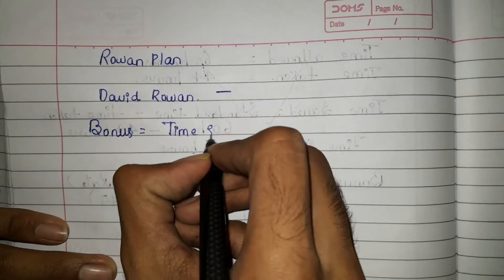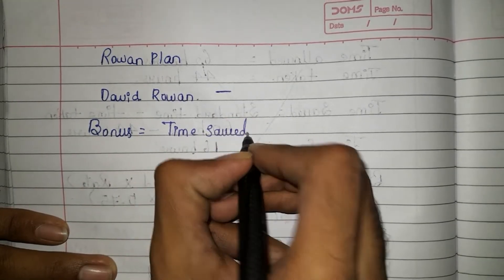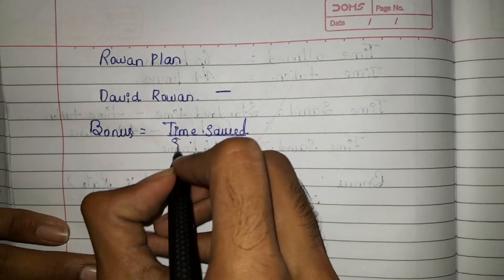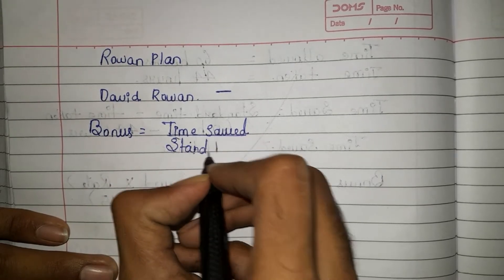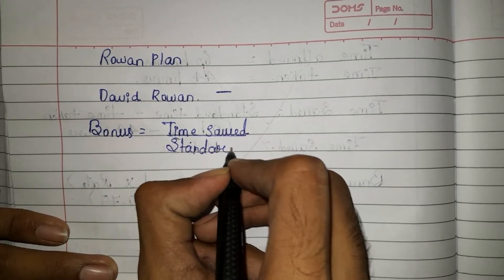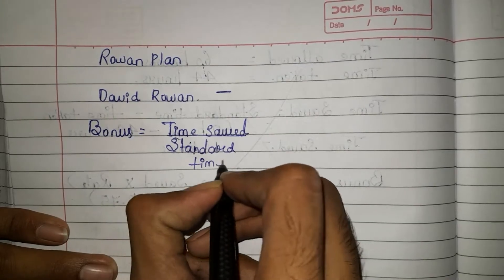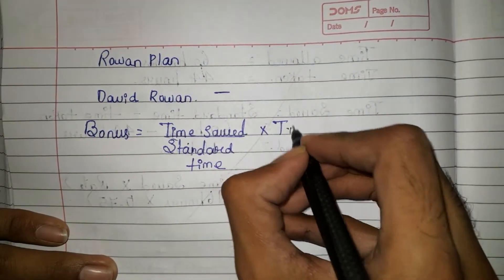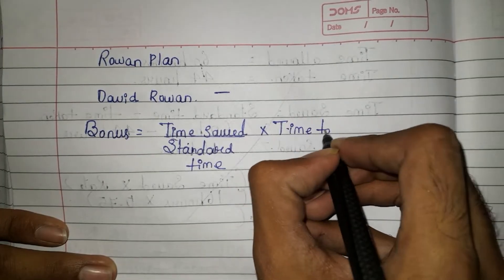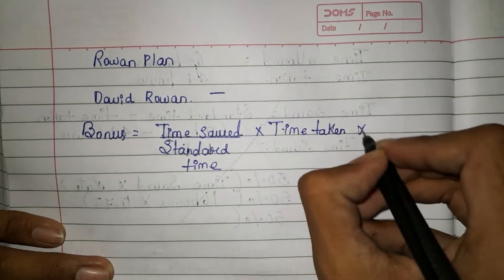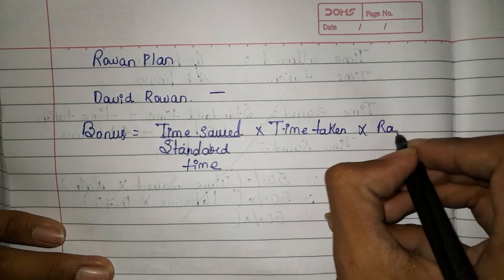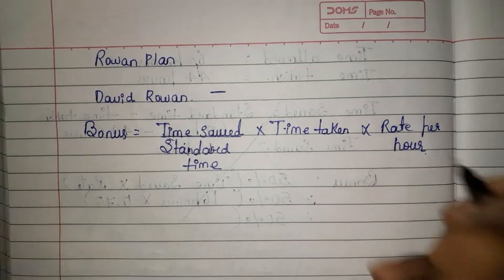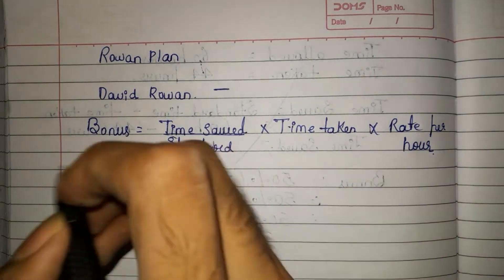The formula is: time saved divided by the standard time, multiplied by time taken, multiplied by rate per hour. This is the formula.